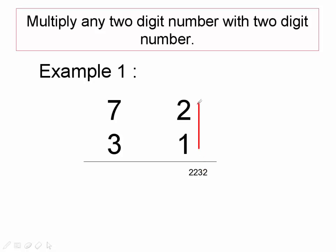You need to first multiply 1 with 2, so you will be getting output as 2 here. The next step you need to perform is cross multiply: 1 with 7 and 3 with 2, and add them separately.